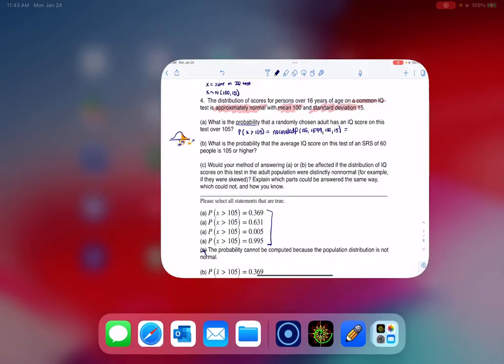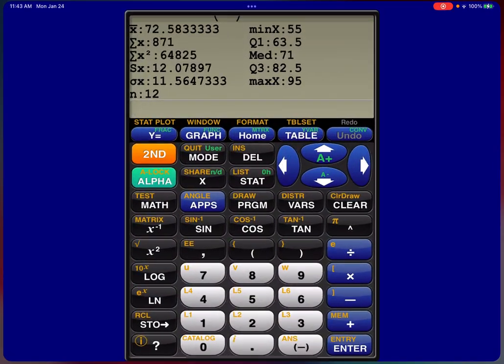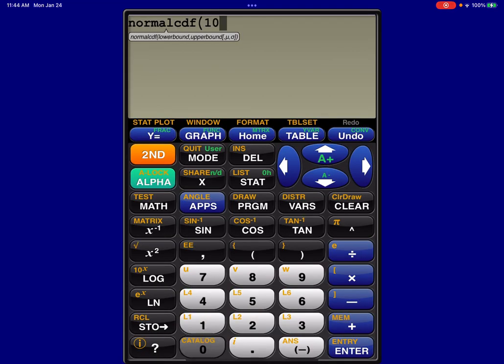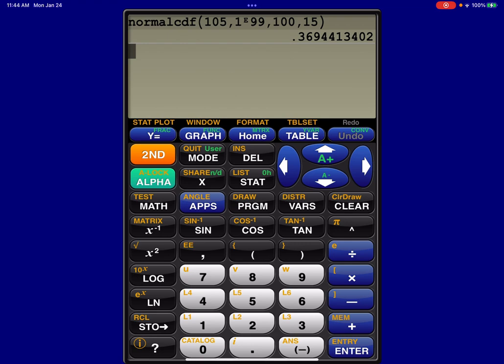Now I'm going to use my app because it's pretty similar to the calculator, the physical calculator at this point. So I'm going to hit second vars, do normal CDF, and we're going to go 105, 1e99, and then we've got 100, 15. And when I crunch that, it looks like it's about 37%.